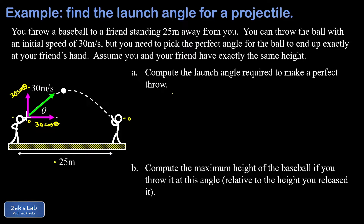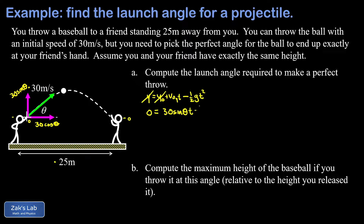We need to analyze what's going on in the vertical and horizontal directions. Starting with the vertical analysis: y equals y-naught plus v-naught-y times t, and plugging in negative g for the acceleration gives minus one-half g t-squared. Since the initial and final y-coordinates are both zero, we get: 0 equals 30 sine theta times t minus one-half g times t-squared.